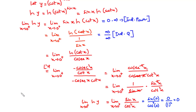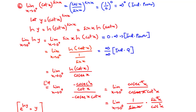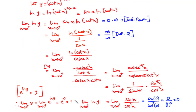From properties of the natural log, e to the power ln y equals y. Since we want the limit as x approaches 0⁺ of y, that equals the limit as x approaches 0⁺ of e^(ln y), which equals e⁰ = 1. Any number raised to the power 0 is 1, therefore the limit of (cos x)^(sin x) as x approaches 0 from the right equals 1.